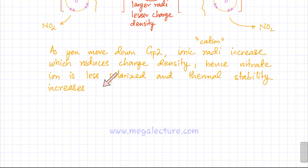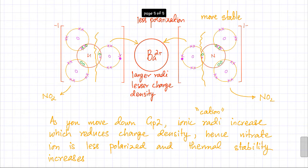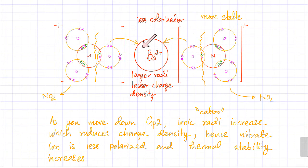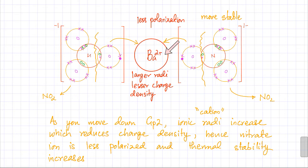As you move down group 2, a bigger cation is going to have less attraction for the nitrate ion. If it has less attraction, the electrons in the nitrate are not going to be disturbed, and the NO₂ molecule or the nitrate ion would not get decomposed very easily, because barium ions are not attracting the oxygen very strongly.